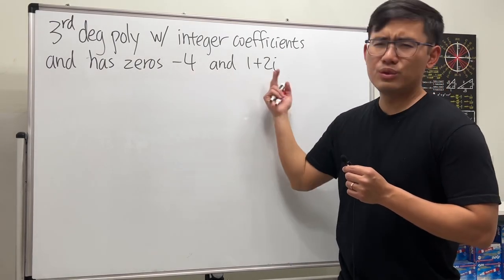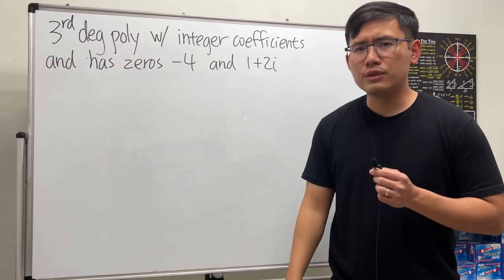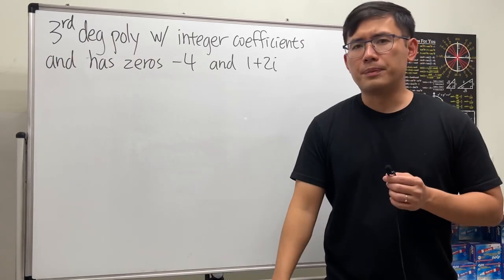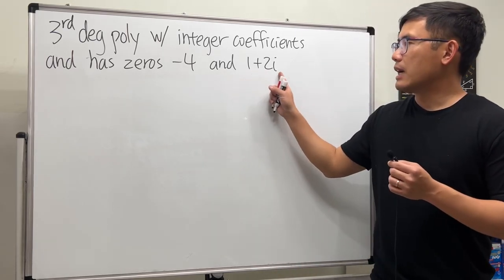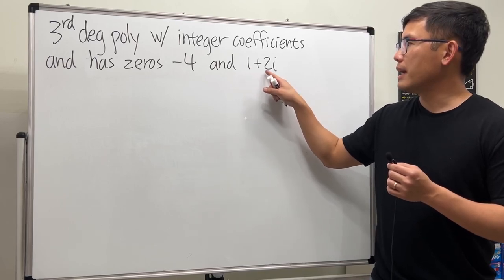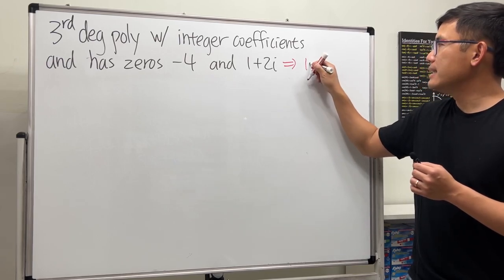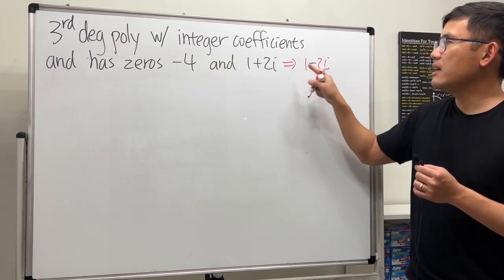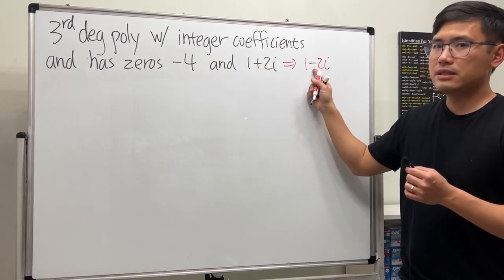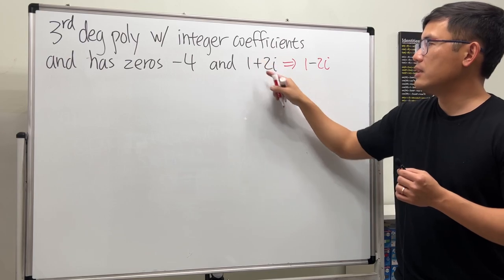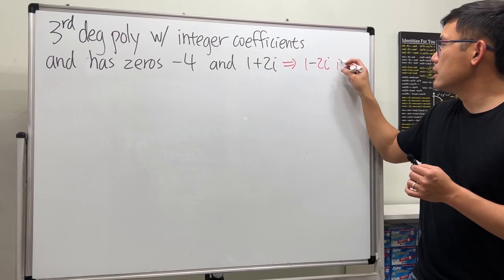Don't we have two zeros? For a third degree polynomial shouldn't we have three zeros? Whenever we have a complex zero like 1+2i, this implies 1-2i, its conjugate. You just change the sign in the middle - it was a plus, now it's a minus.